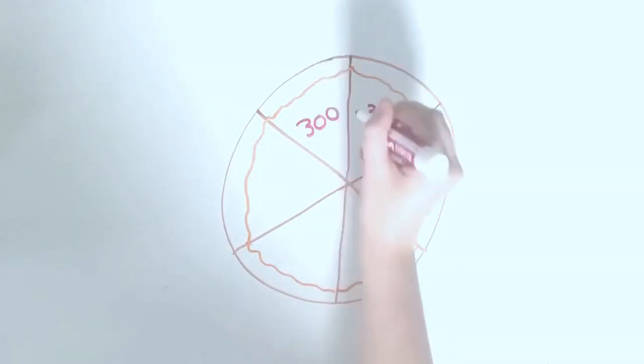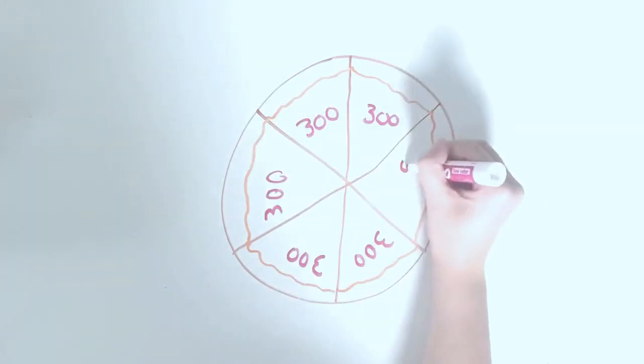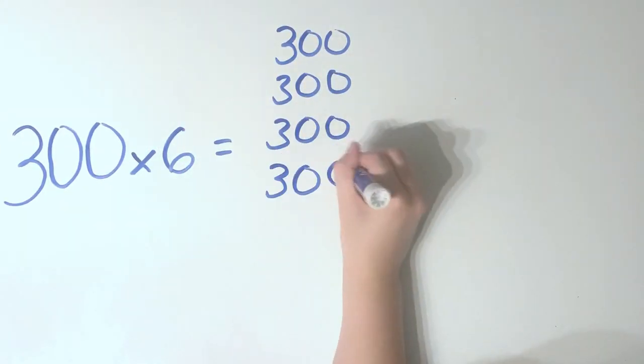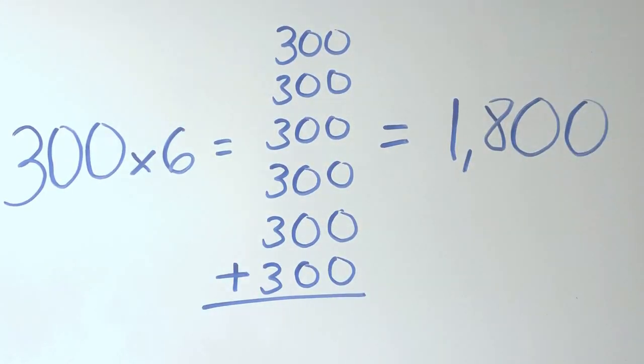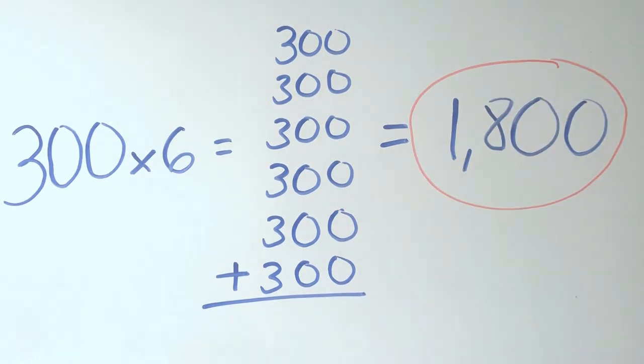In order to find out how many calories you ate, you'd have to multiply the amount of calories in one serving, that's 300, times how many servings you ate, that's six. Since you ate six times the serving size,